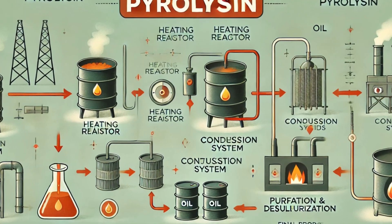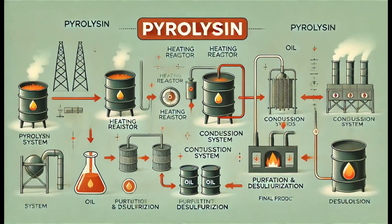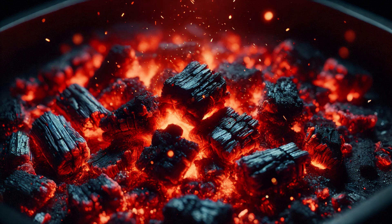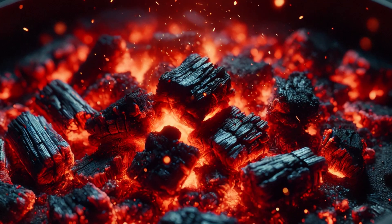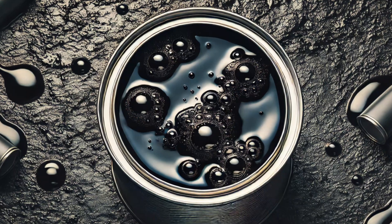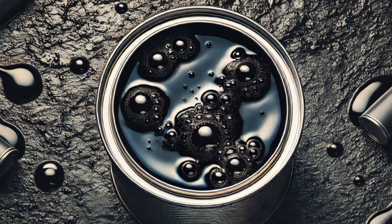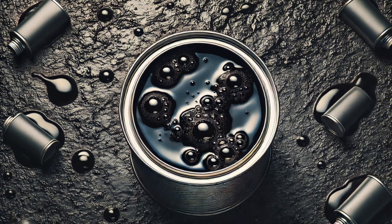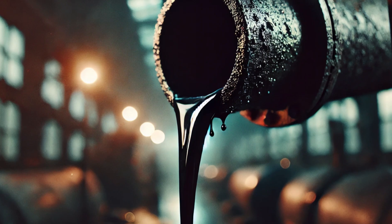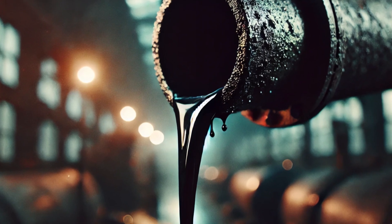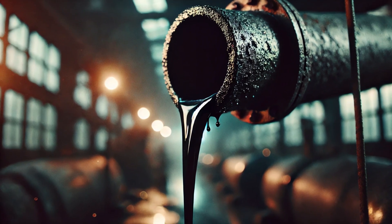The fundamental process involves heating an organic material to extract the desired compounds. This process is known as pyrolysis, which is the thermal decomposition of organic material in the absence of oxygen. By heating materials like coal or wood in a controlled environment, volatile compounds are released, leaving behind tar and other byproducts. The end result is a viscous liquid that can be processed further to meet specific industrial needs.